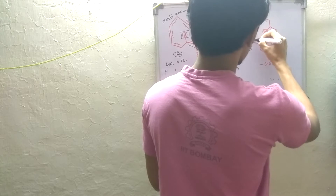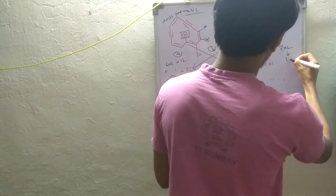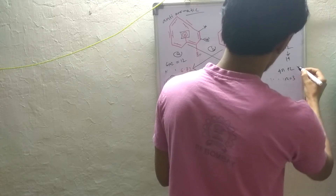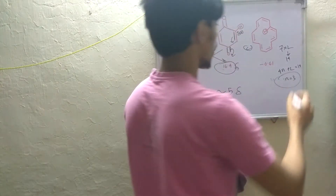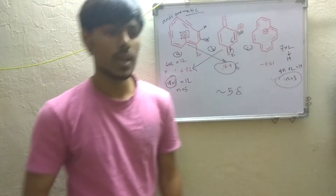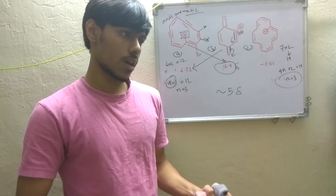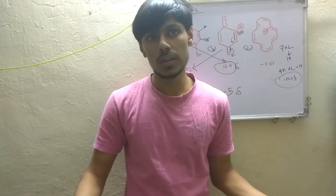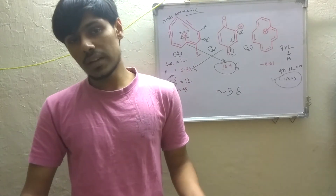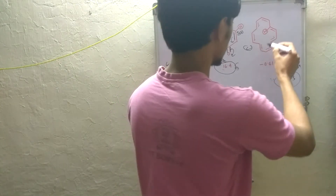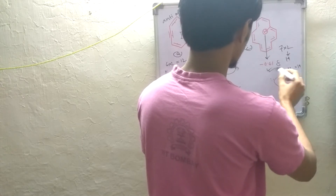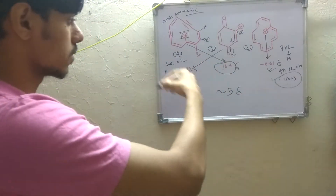Now for compound C, counting the pi electrons: one, two, three, four, five, six, seven — seven times two is fourteen pi electrons, which is 4n+2 where n equals three. So this is an aromatic system. For an aromatic system, we discussed that if a proton is on the inner side of the aromatic ring, its resonating frequency can increase to such an extent that it comes to a negative delta value — that is, it resonates at lower frequency than TMS. This is reflected here: it resonates at minus 0.61 delta.